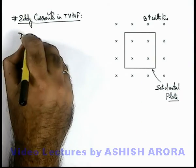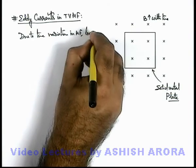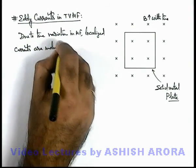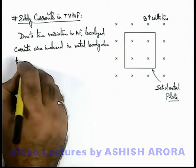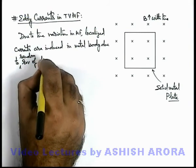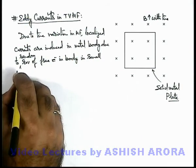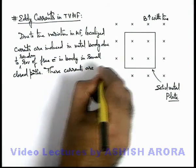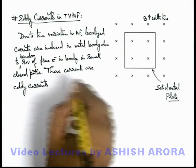Due to time variation in magnetic field, localized currents are induced in the metal body. This happens due to the random revolution of free electrons in the body in small closed paths. These localized currents are called eddy currents.